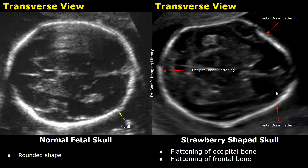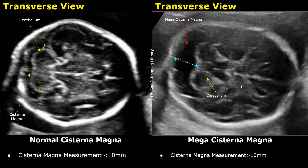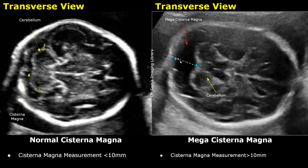The posterior fossa of the brain can also be affected by Edwards syndrome. Cisterna magna is a fluid filled space behind the cerebellum. This anechoic space behind the cerebellum is the cisterna magna. Normally it should not measure more than 10 millimeters — a measurement below 10 millimeters is normal. In mega cisterna magna, this cisterna magna measurement will be more than 10 millimeters and is considered abnormal.